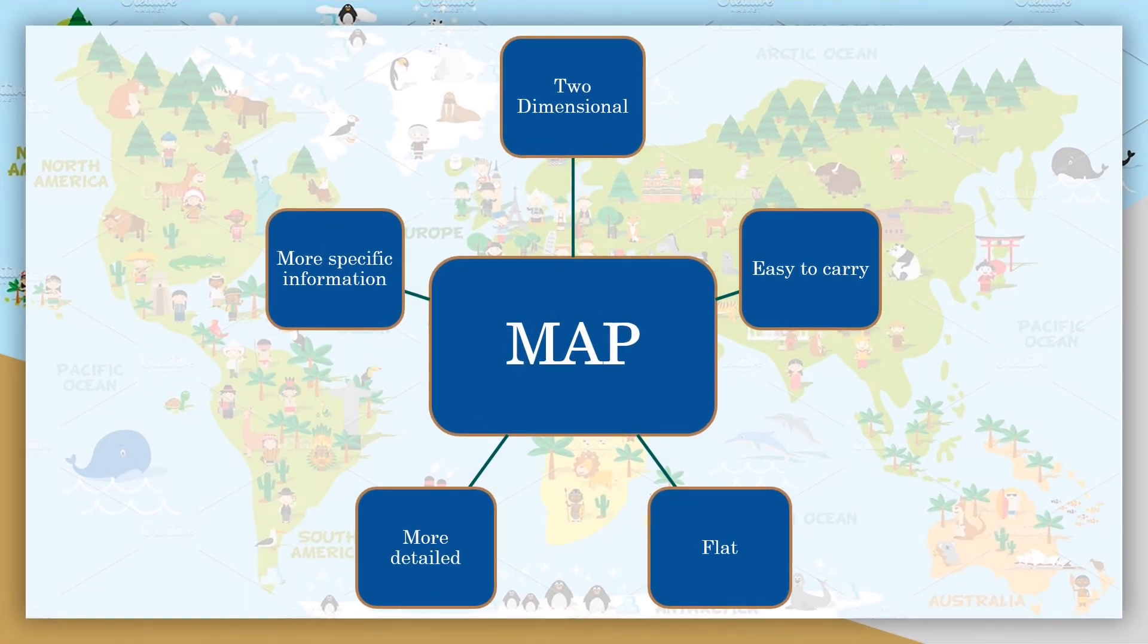If I talk about the characteristics of map, so map is two dimension, easy to carry, flat. It has more details and more specific information. These all are the properties of map.